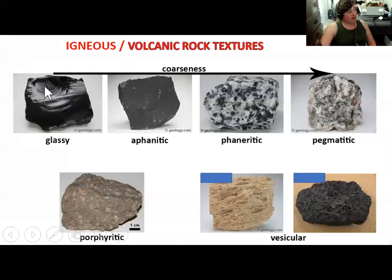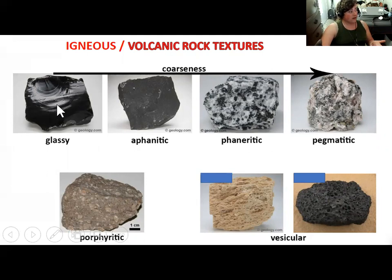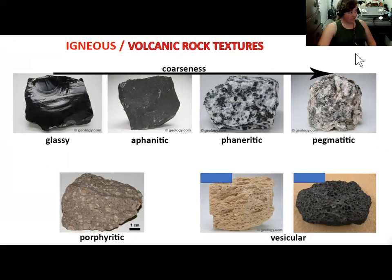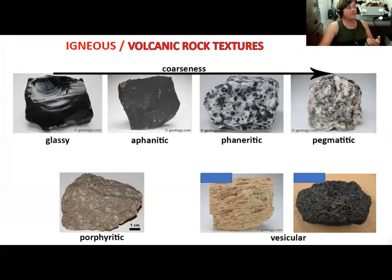There are igneous rocks that cool so quickly that you don't get any crystals at all — you just get glass. This rock is obsidian, also known as volcanic glass, an igneous rock that doesn't have any minerals in it because the magma cools so quickly that crystals don't have time to grow.